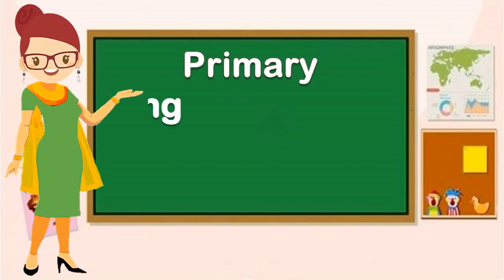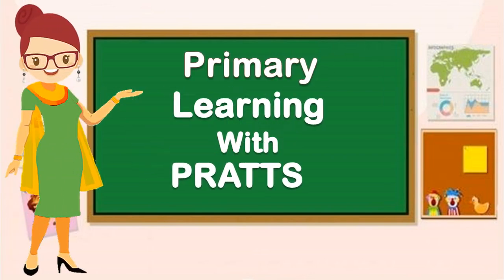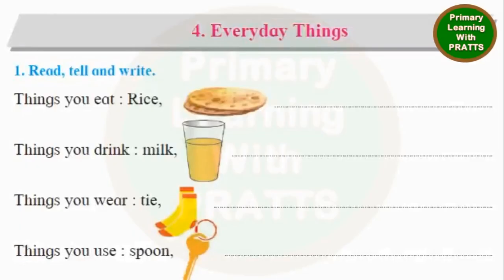Welcome to Primary Learning with Prats. Today we are doing Standard 1, Unit 6, Chapter 4, which is Everyday Things.